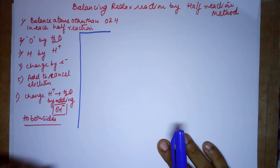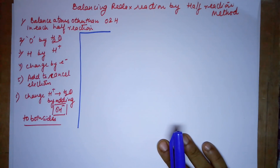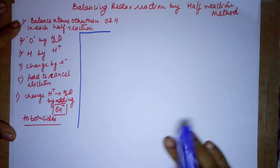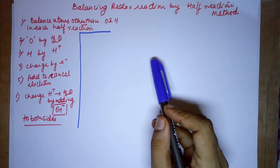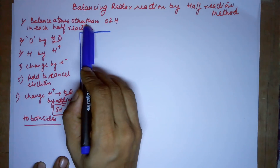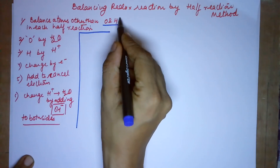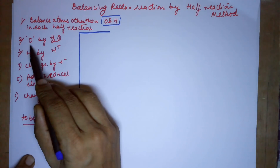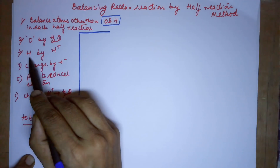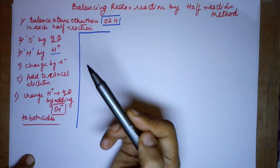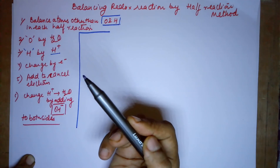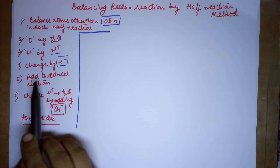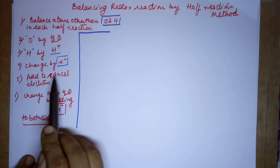Hello students, today we'll be doing the topic balancing of a redox reaction by the half reaction method. The steps involved are: first, divide the reaction into two half reactions and balance the atoms other than oxygen and hydrogen. Second, balance oxygens using water molecules and hydrogens using H⁺ ions — we'll be balancing in acidic medium by default. Charge needs to be balanced by electrons, which are negatively charged. Finally, the two half reactions need to be added so that the electrons get cancelled.